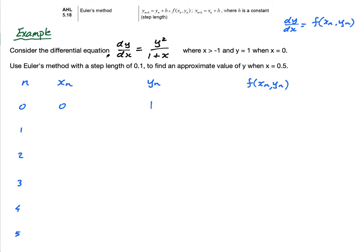Now, look, it says the step length is 0.1. So, my step length is 0.1. That's my h. h is 0.1. And, he wants me to find an approximate value of y when x is 0.5. So, I'm going to go 0.1. That's the first step. Then 0.2, 0.3, 0.4, and 0.5.